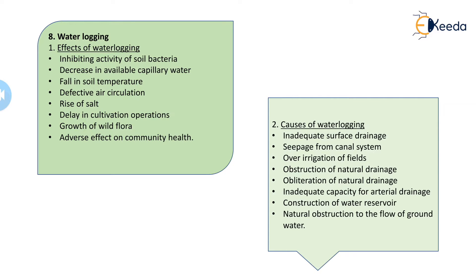The fifth effect is the rise of salts. Because of waterlogging, minerals are carried with the water, and soluble minerals already available in the groundwater table cause the salt amount to rise. As a result, the surface becomes infertile or alkaline. The sixth effect is delay in cultivation operations — we cannot perform cultivation operations in a waterlogged area.